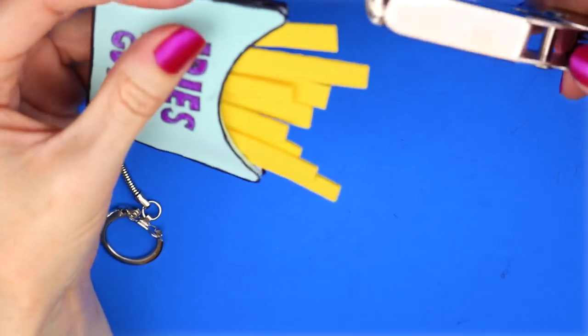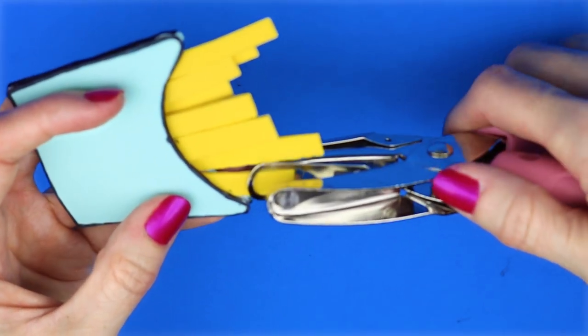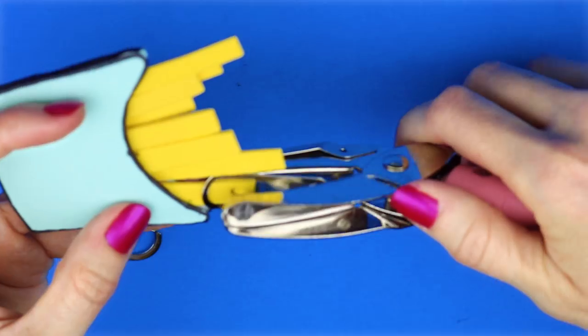Using a hole punch, I punched a hole in one of the fries and then I used a key chain and a jump ring and attached it to the fry.